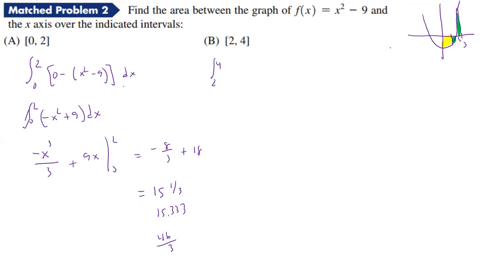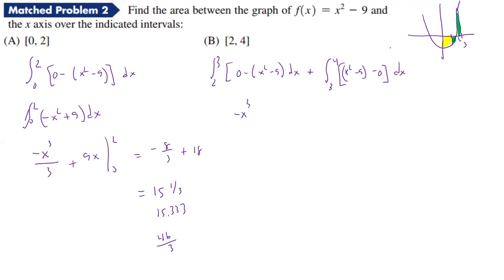Now going from two to four, we actually need to split this into two pieces because the zero of the function is at x = 3, not x = 4. So we have the integral from two to three of (0 - (x² - 9)) dx, plus the integral from three to four of ((x² - 9) - 0) dx. The first piece gives (-x³/3 + 9x) from two to three, and the second gives (x³/3 - 9x) from three to four.